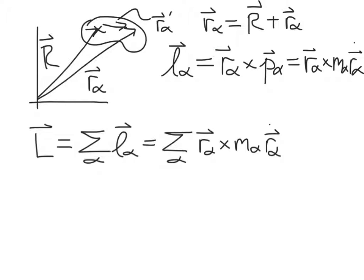Now let's think about the system's total angular momentum. Here's our bean-shaped object. The center of mass is located at position capital R, and each element of the system is located at position r_alpha. The position of each element relative to the center of mass is r_alpha-prime. The r_alpha vector pointing from the origin to each element is given by the sum of these two vectors.